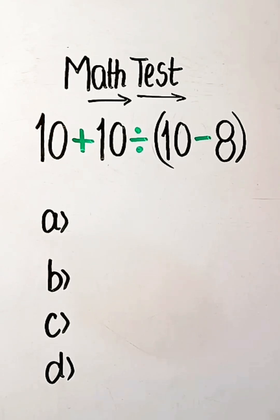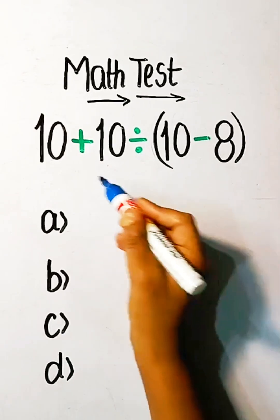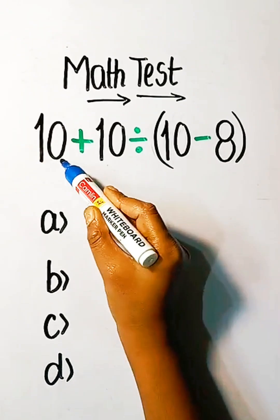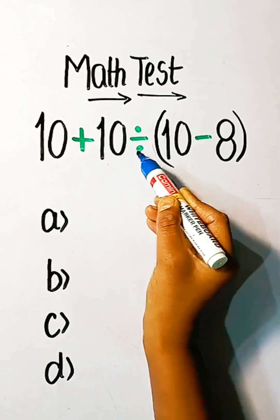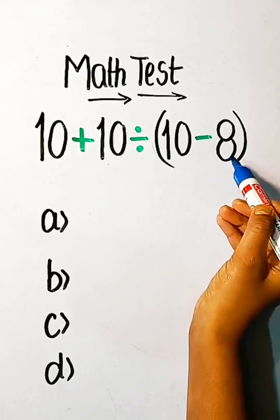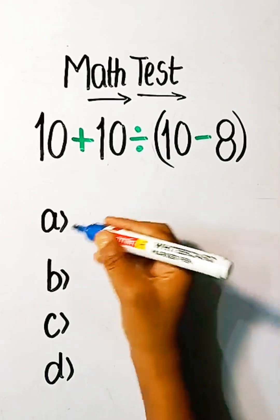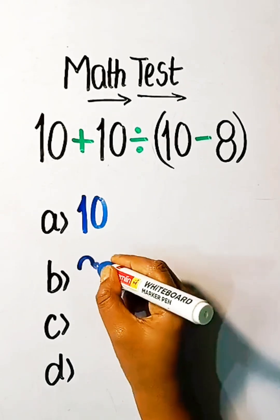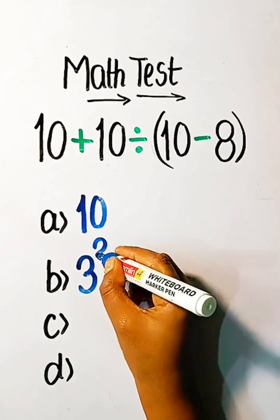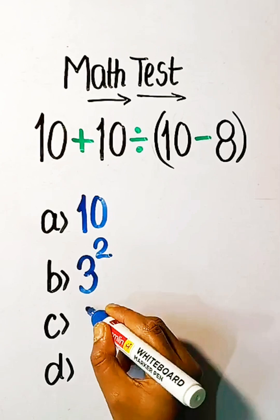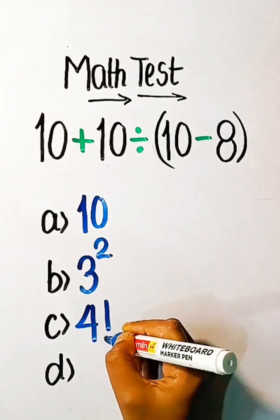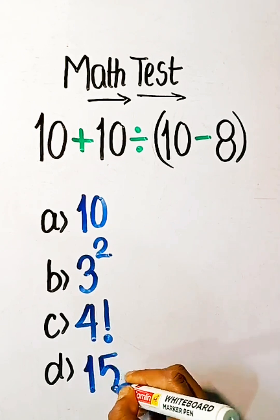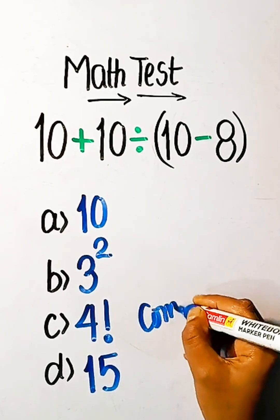Hello friends, today we are going to solve this math expression: 10 plus 10 divided by 10 minus 8 equals what? Option A: 10, Option B: 3 squared, Option C: 4 factorial, or Option D: 15. Comment your answer.